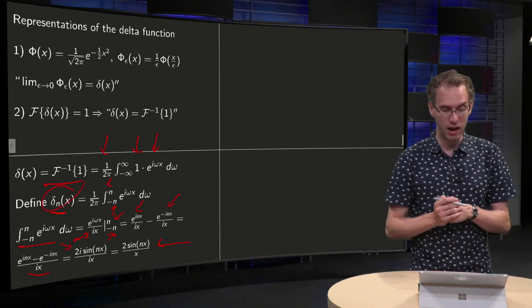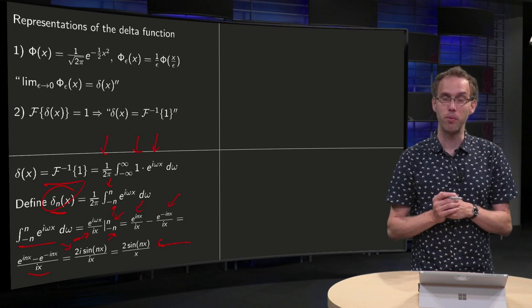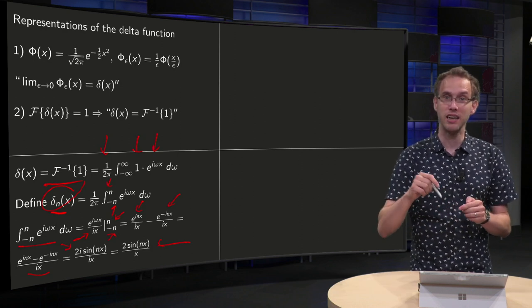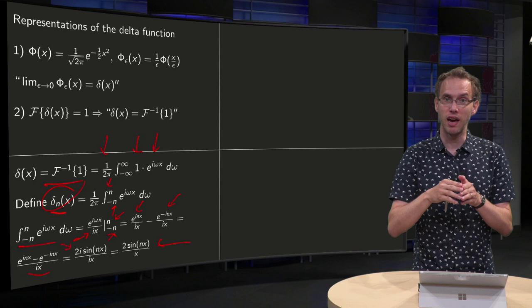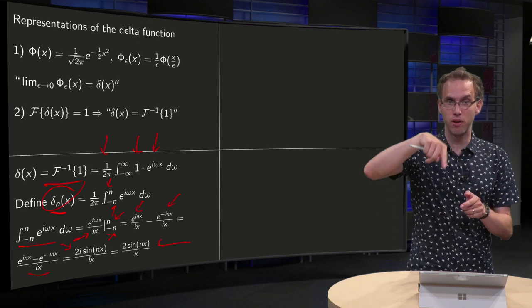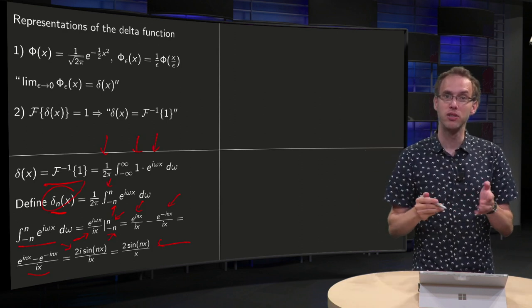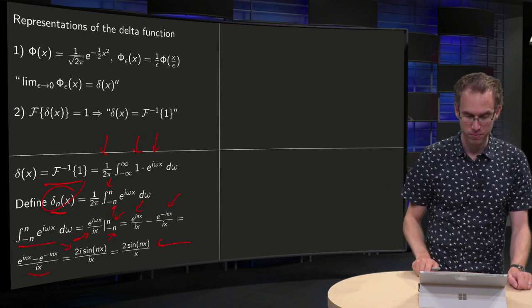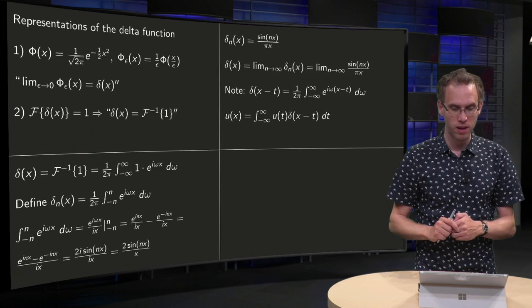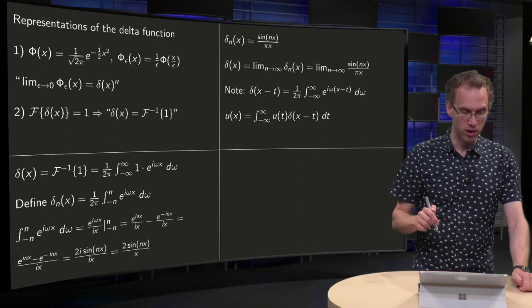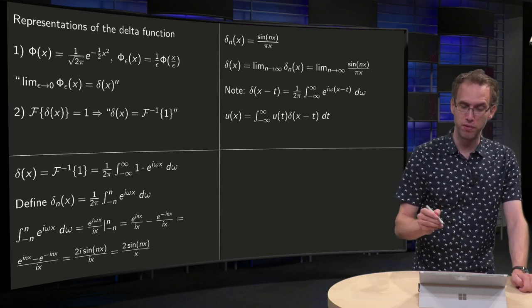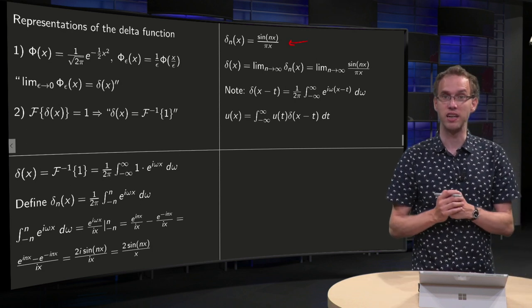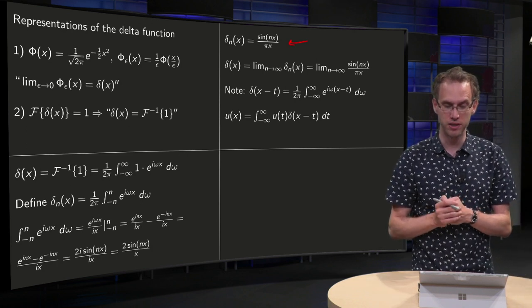And now you see what is the problem over here, your sine n is a sine, and if you take n larger and larger it goes faster and faster up and down, so it starts to wiggle faster and faster. Oh, forgot the factor 2π, for the δ_n(x) you get sine nx over πx.